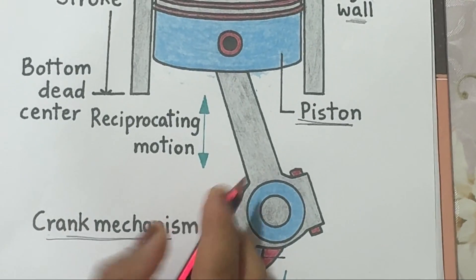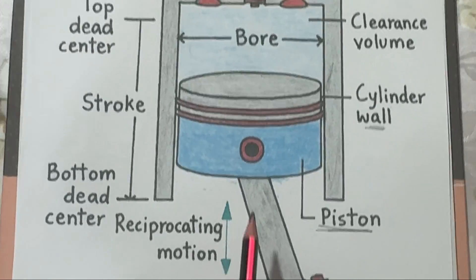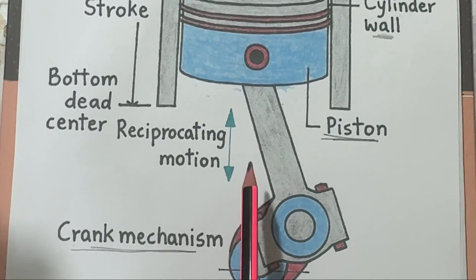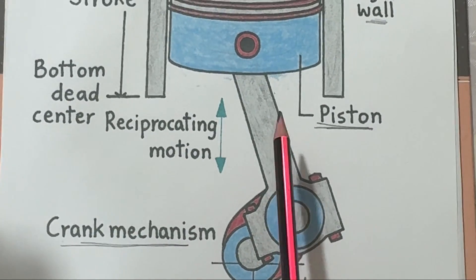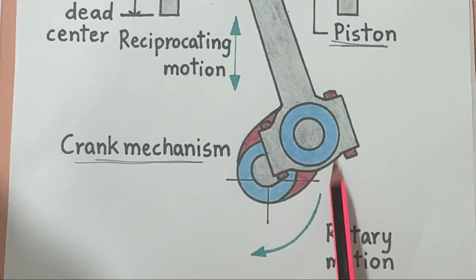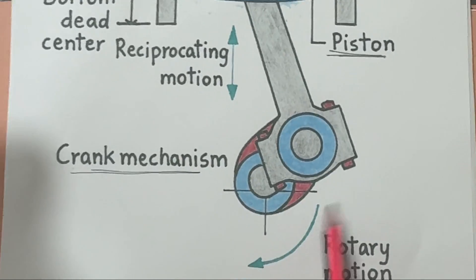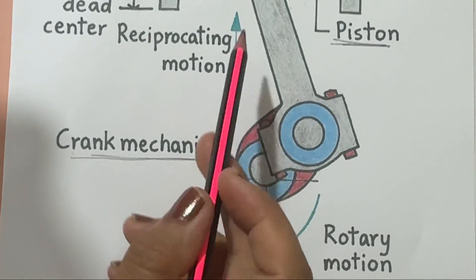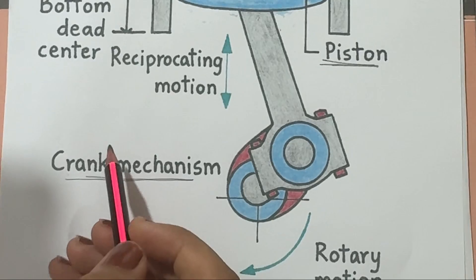The piston is connected to a crank mechanism made up of the connecting rod and the crankshaft. As the piston moves up and down, the connecting rod transfers that motion to the crankshaft, which converts it into rotary motion. This rotary motion is what turns your vehicle's wheels. So basically: piston moves up and down, crankshaft rotates, vehicle moves forward.